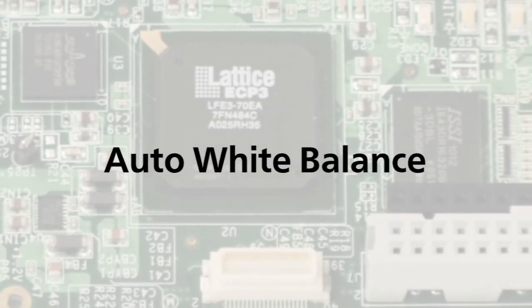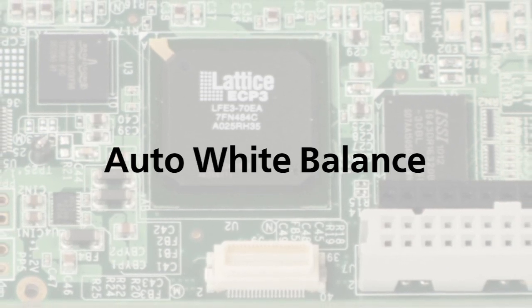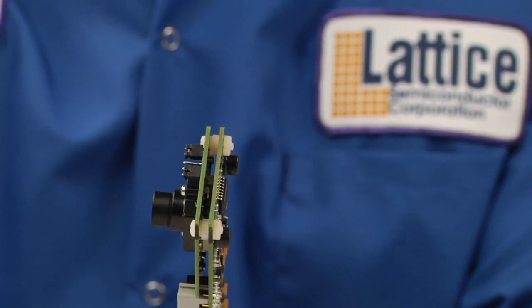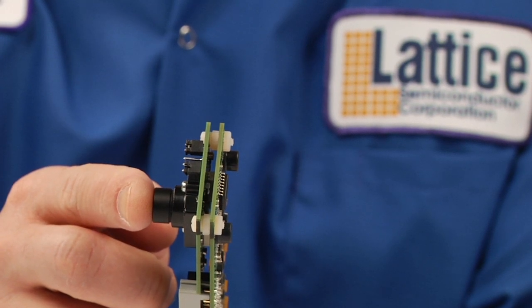Auto White Balance. Another cool thing about the image processing pipeline is auto white balance. To demonstrate, John covers the lens for about five seconds to completely mess up the sensor by depriving it of light. When he removes his finger, you can see that the image is tinted.